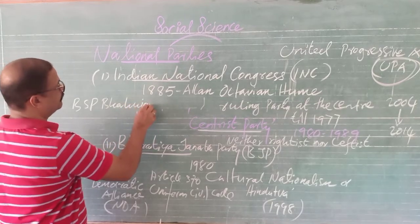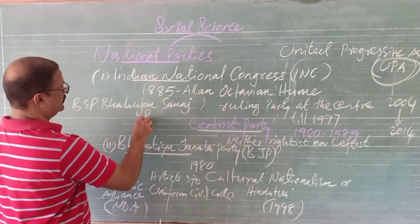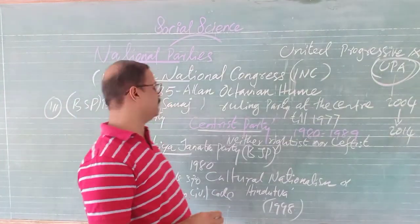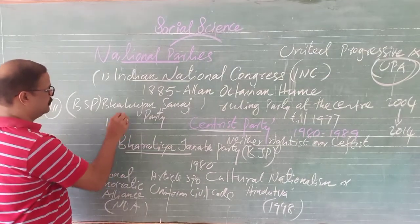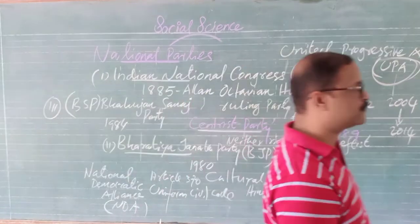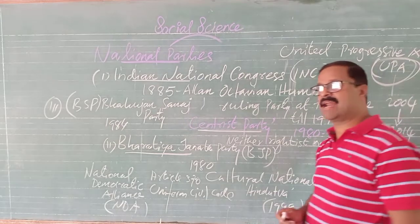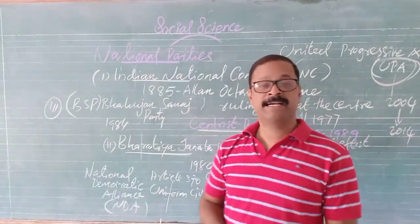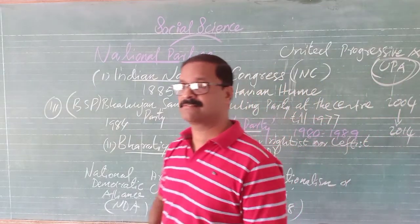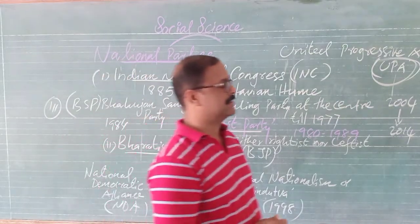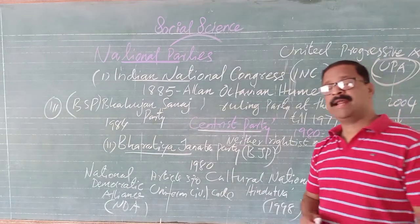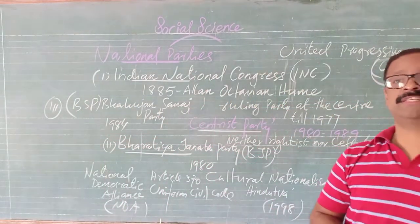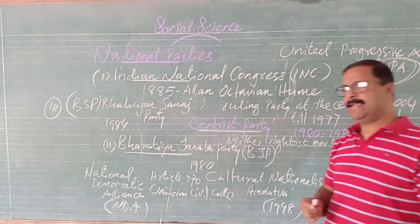The third party is the Bahujan Samaj Party, or BSP, founded in the year 1984 by Kanshi Ram. This party represents the Bahujan Samaj, including Adivasis, Dalits, and OBCs, drawing inspiration from the teachings of Mahatma Phule, Narayana Guru, Periyar Ramasamy, and Dr. B.R. Ambedkar. The party works for the cause of the interests of Dalits and minorities.